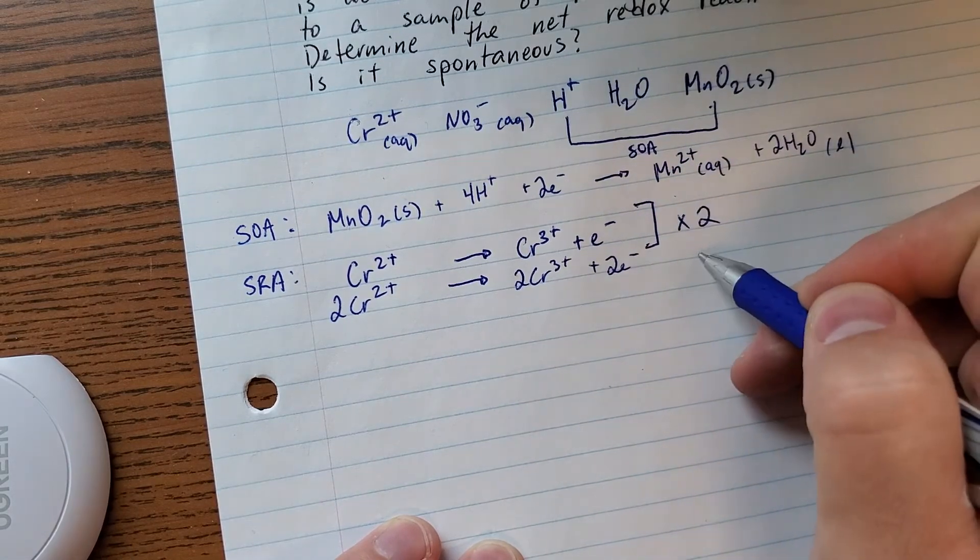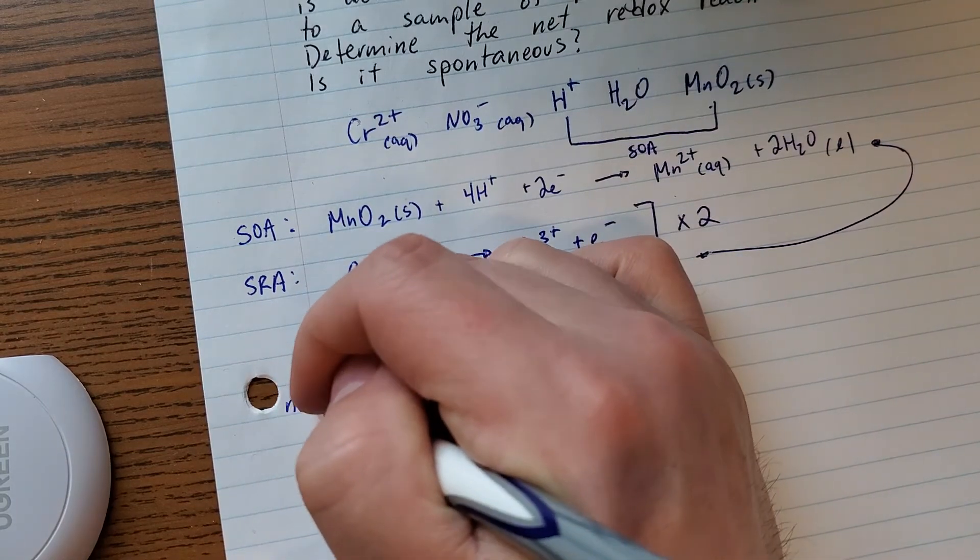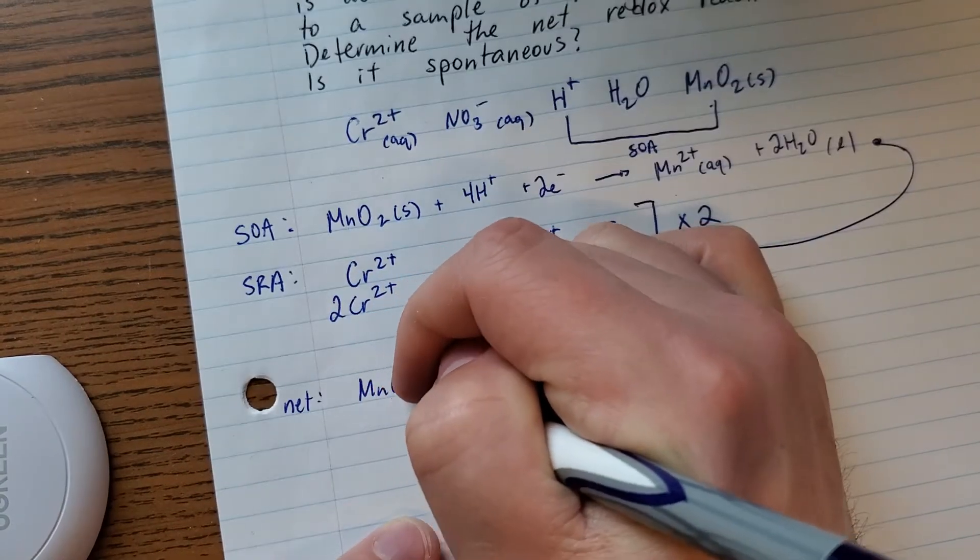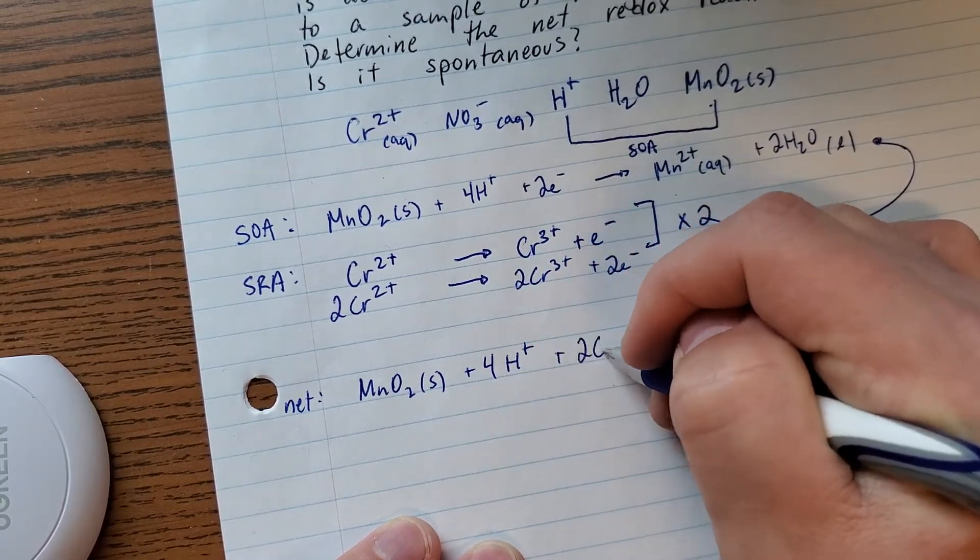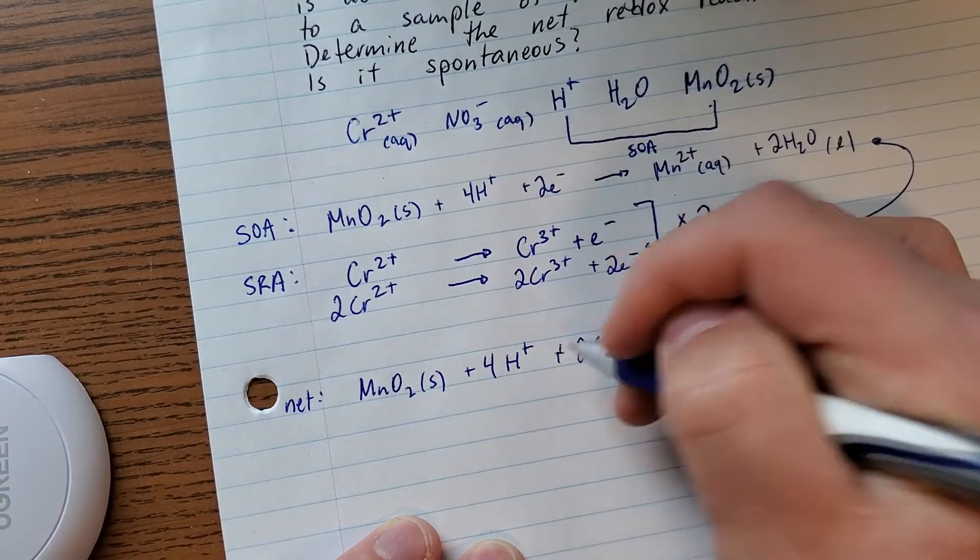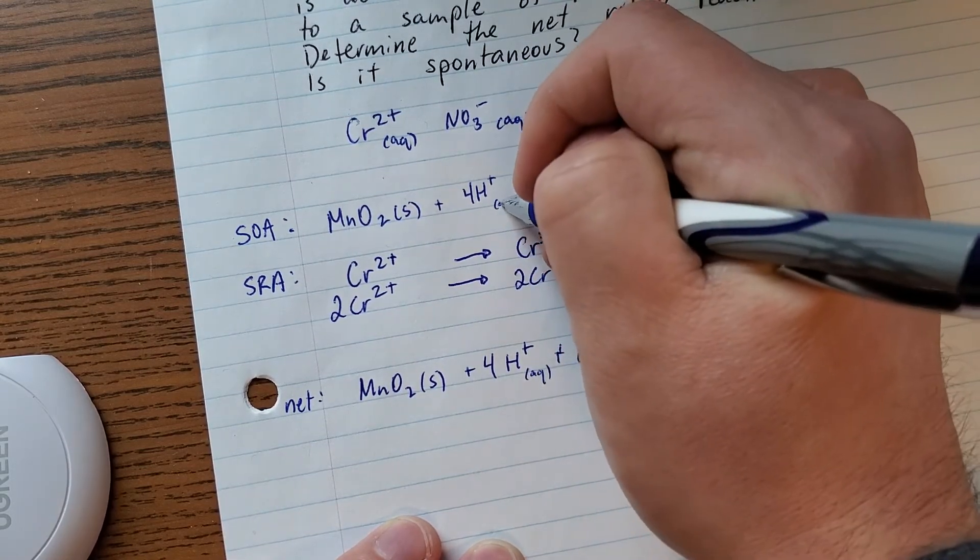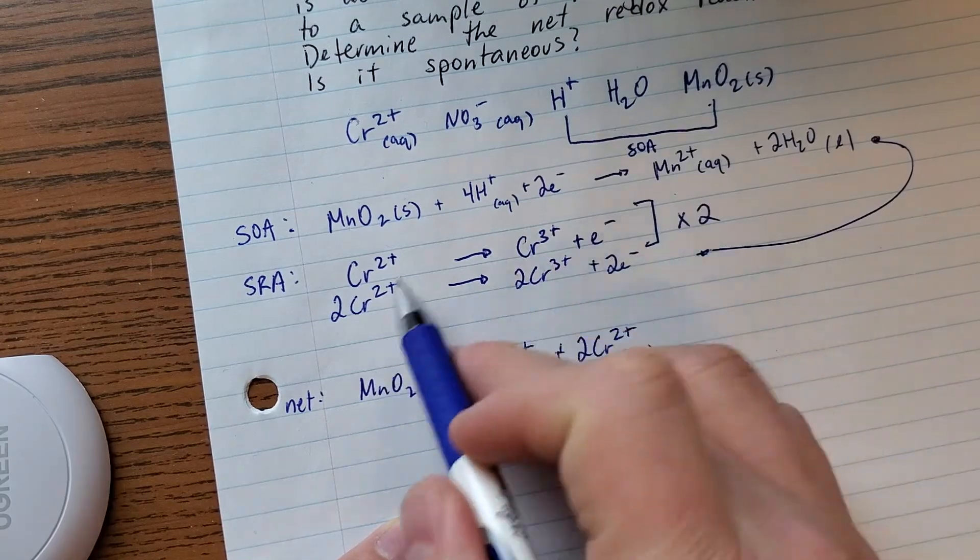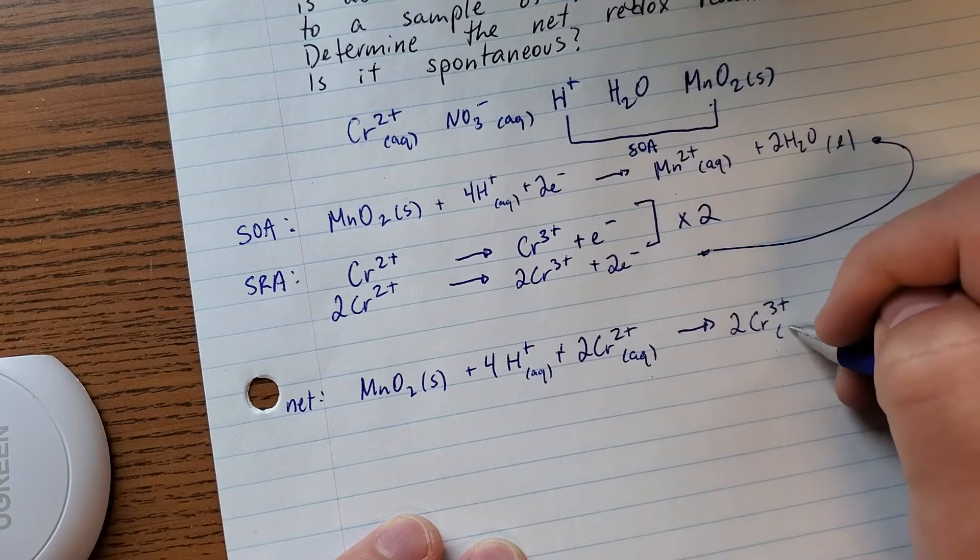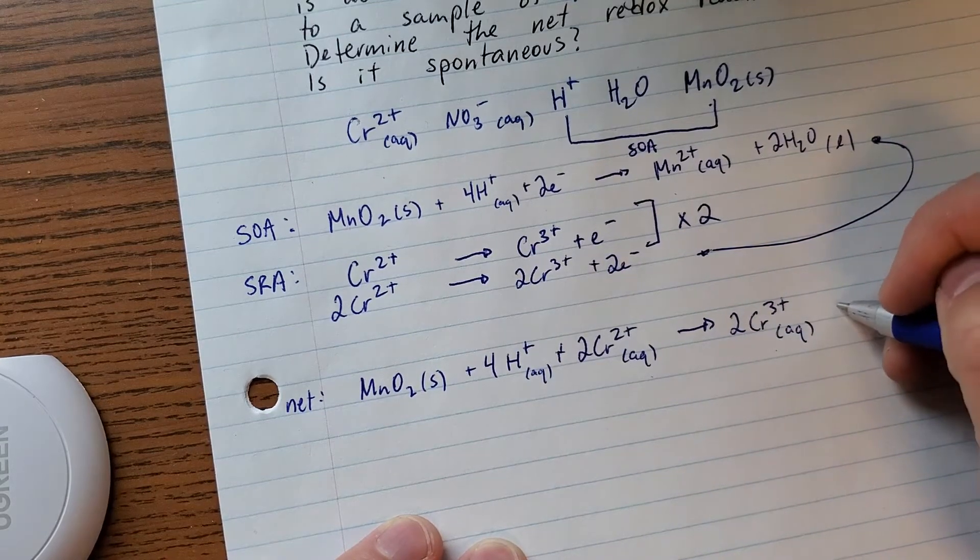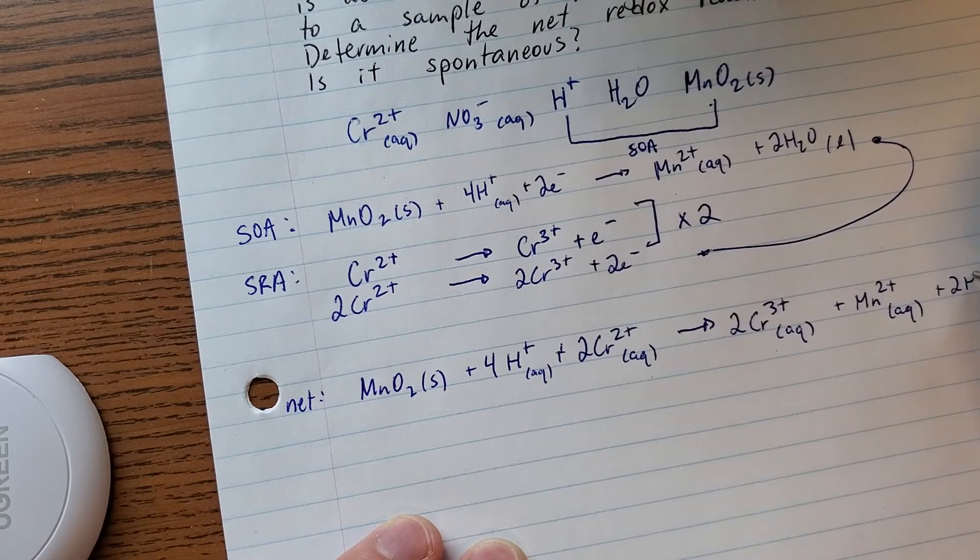And now you just combine your two half reactions. So that'll be my net. Let's see what it looks like. Looks like I've forgotten a state symbol. Not a big deal. Oops, I forgot them all over the place here.